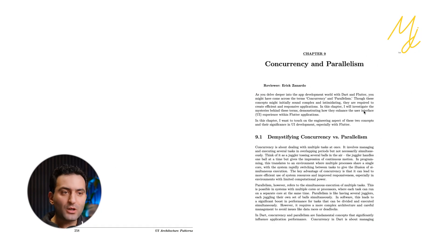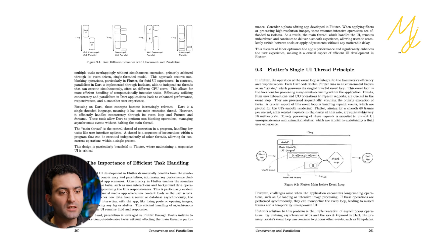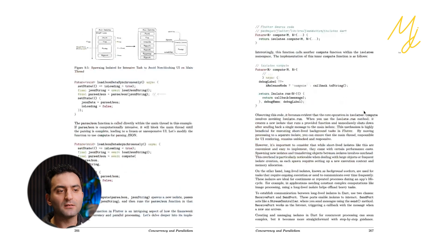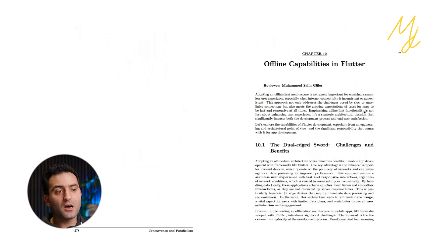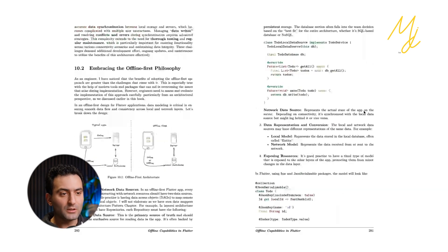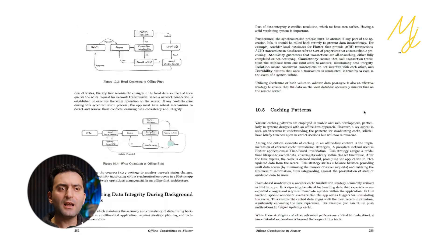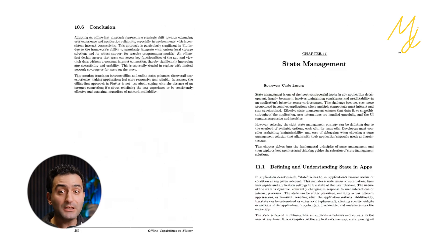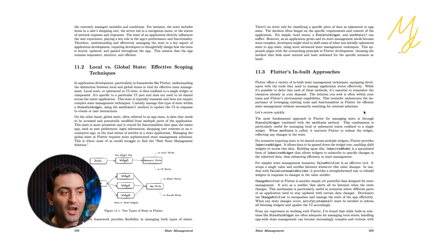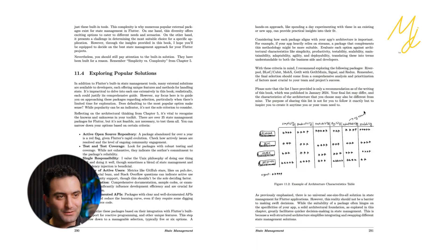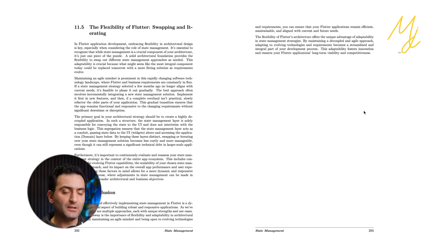Chapter nine covers concurrency and parallelism, discussing isolates and different ways of writing asynchronous code as well as parallelism in Dart. Then there's a chapter on offline capability with patterns you can apply to your Flutter app, followed by a quick overview of state management — not just about which solution is best, but about how you can define a state management approach that works for you. It's quite opinionated based on my experience.